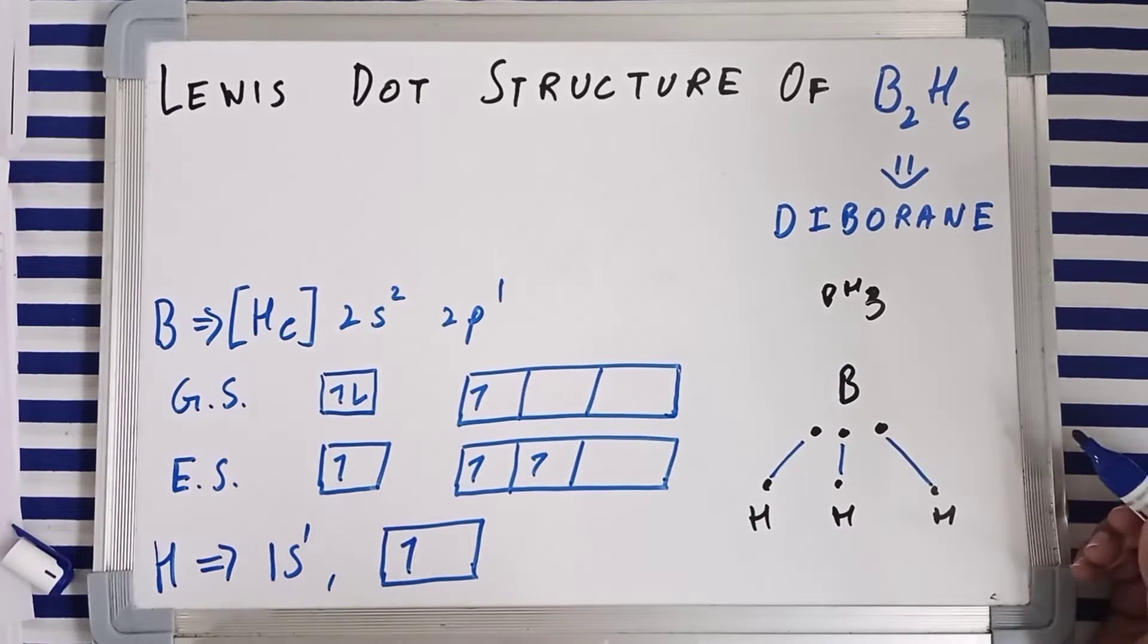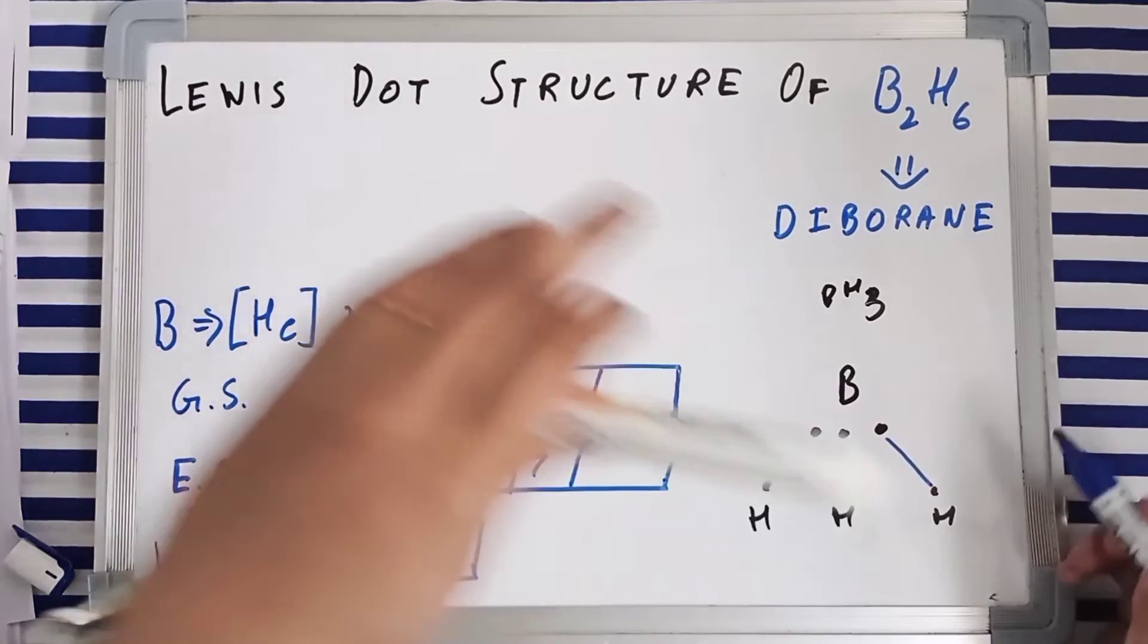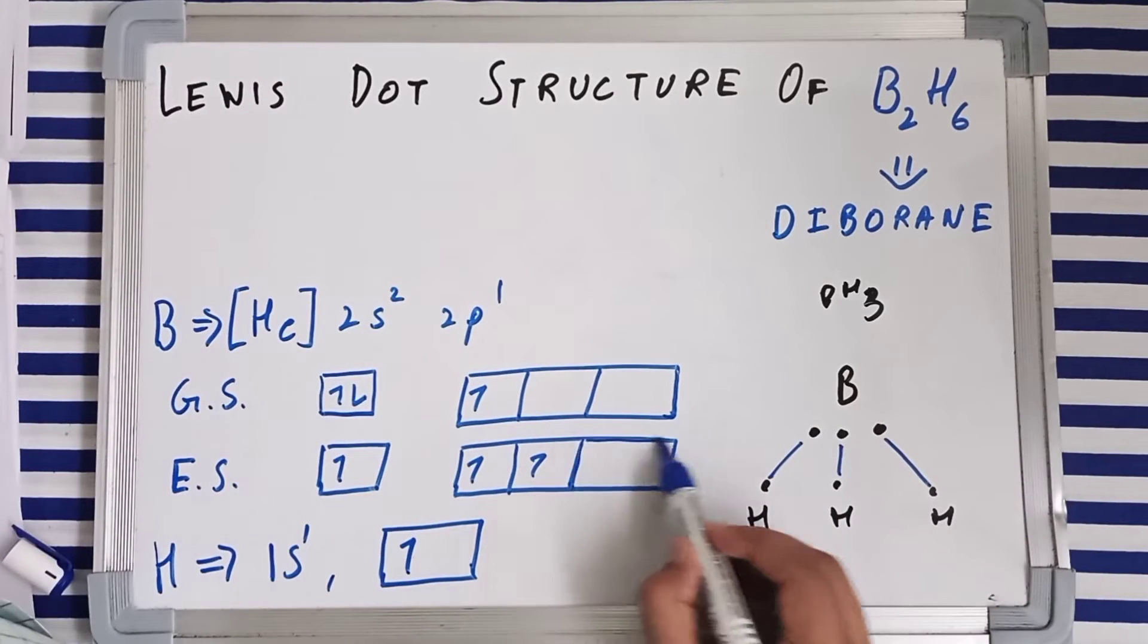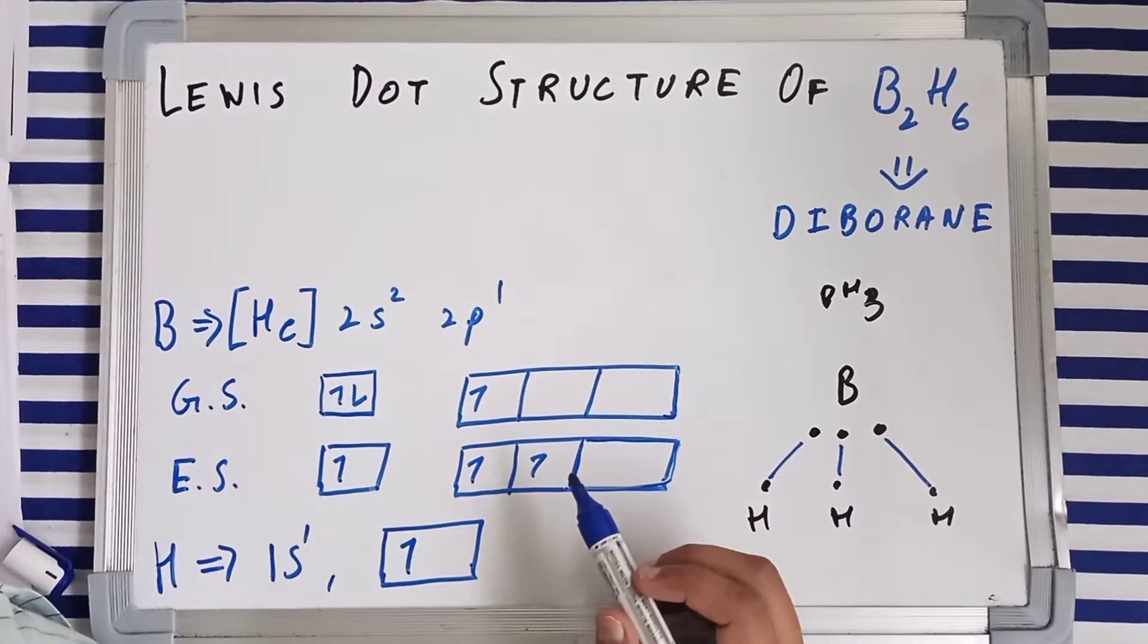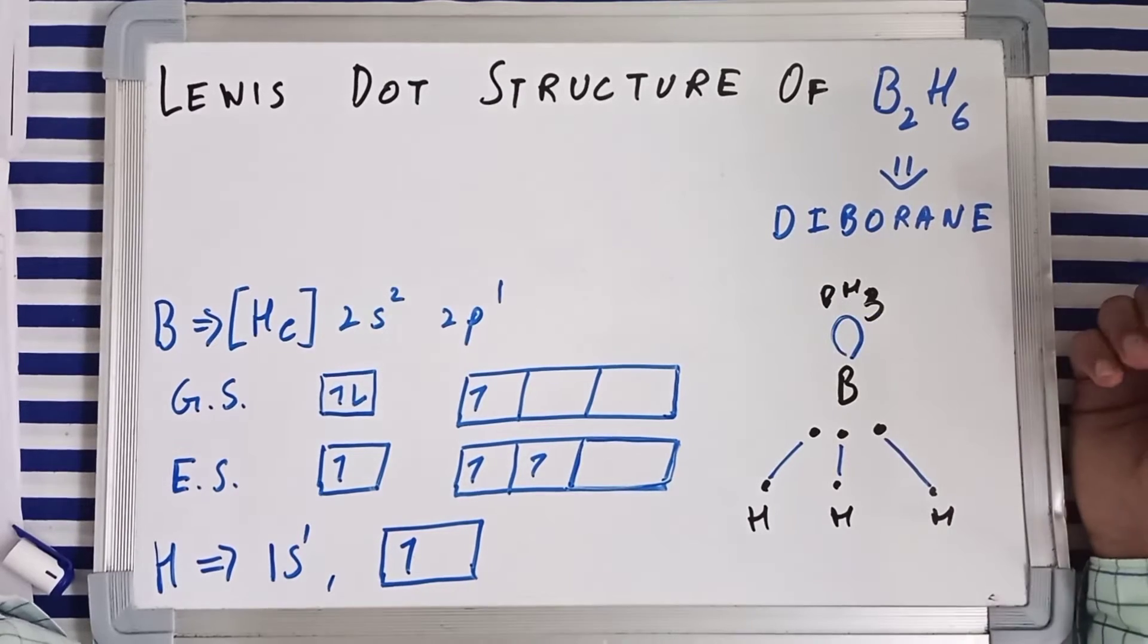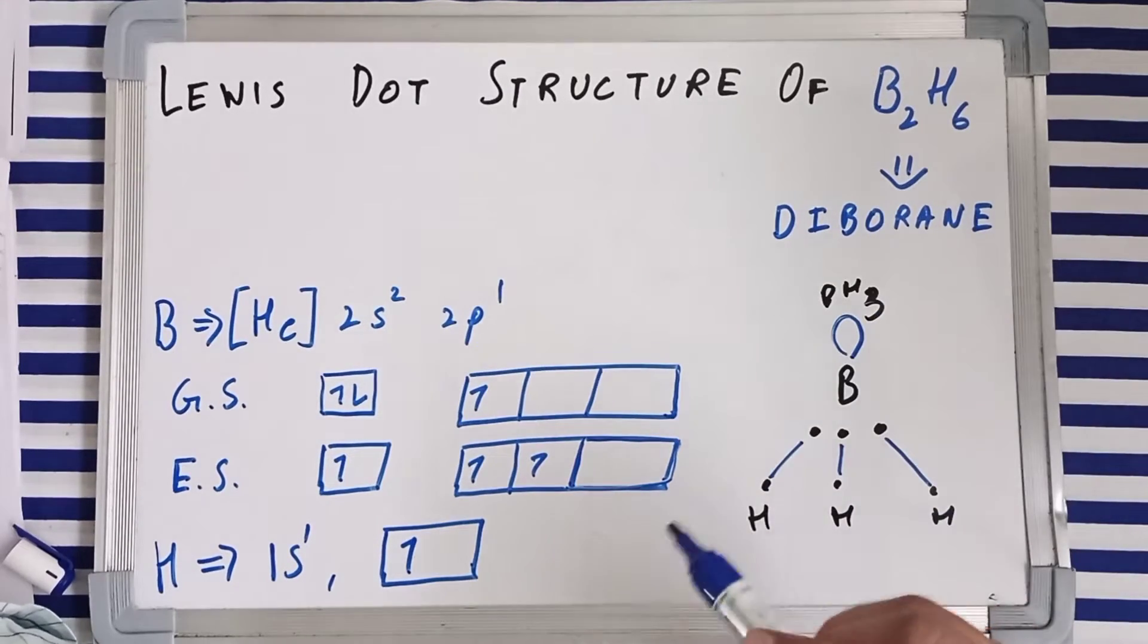Each hydrogen is going to make a single bond with boron. And also one more thing, if you notice, you have got a vacant orbital from the 2p subshell.